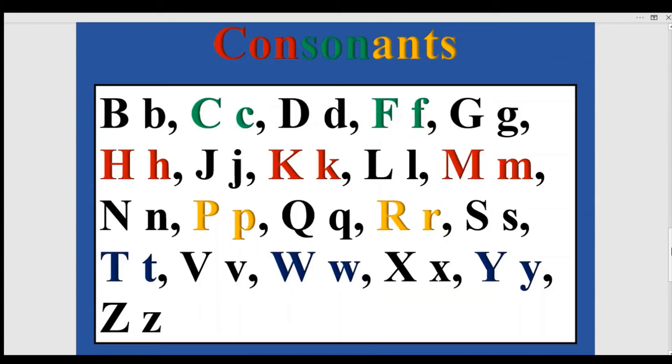Here are all the consonants in the alphabet. We have B, C, D, F, G, H, J, K, L, M, N, P, Q, R, S, T, V, W, X, Y, Z.